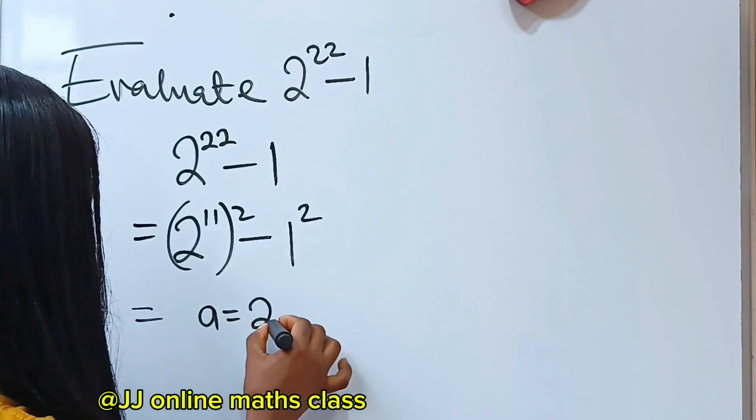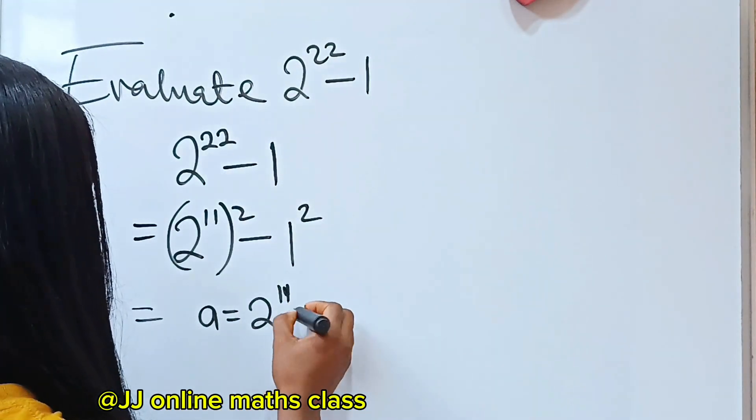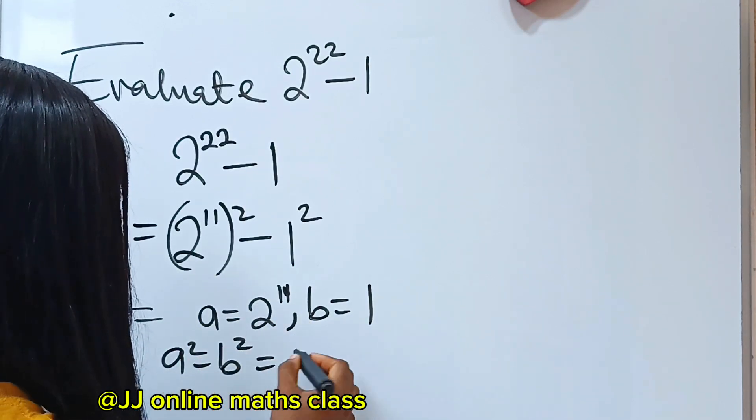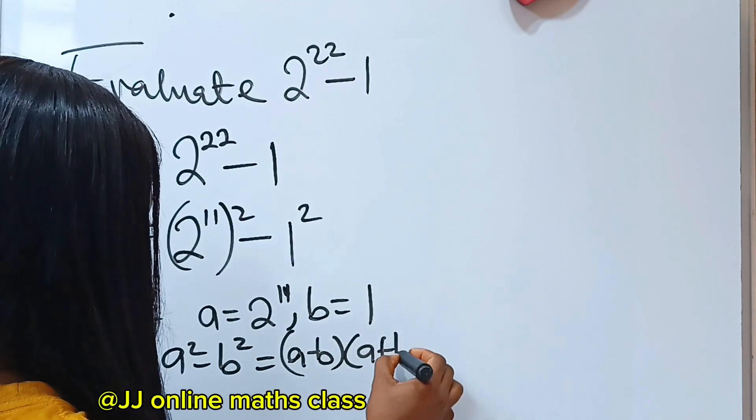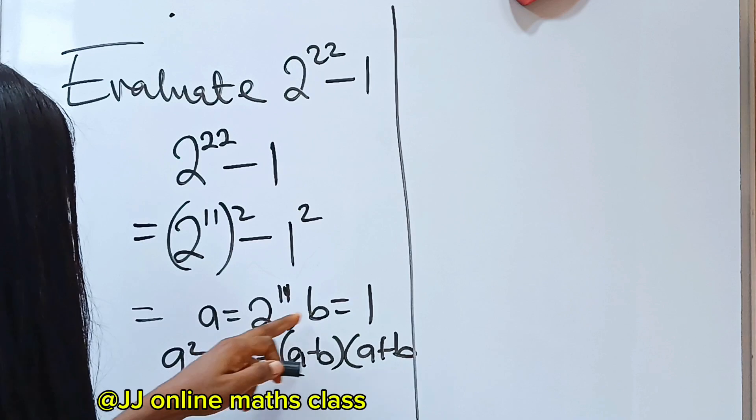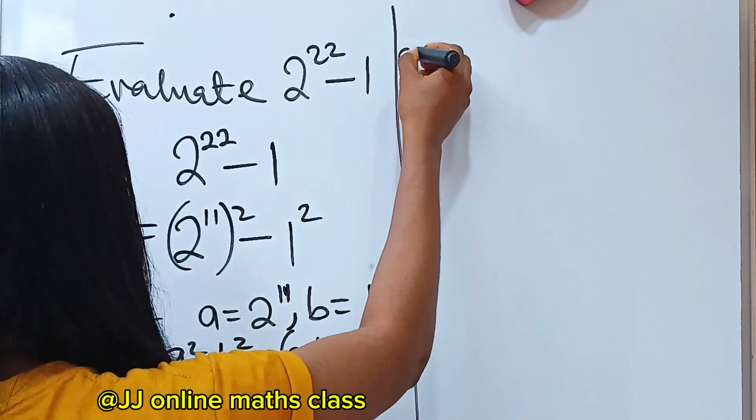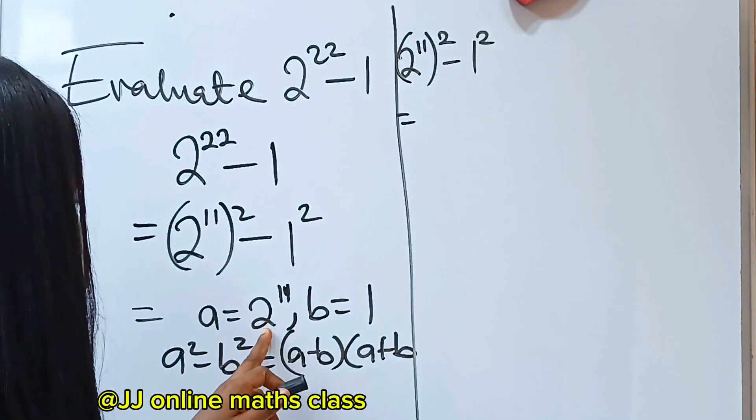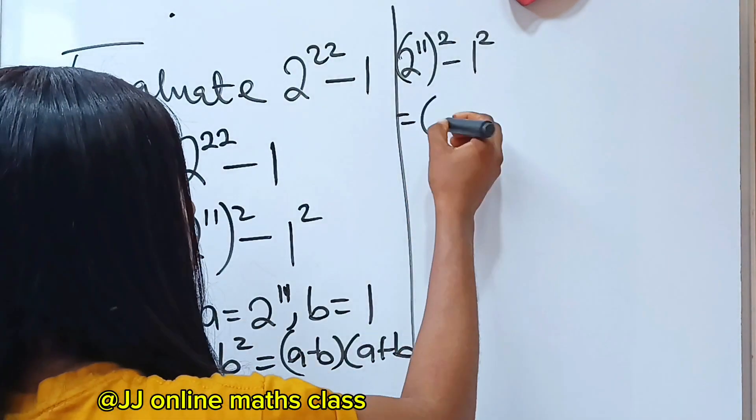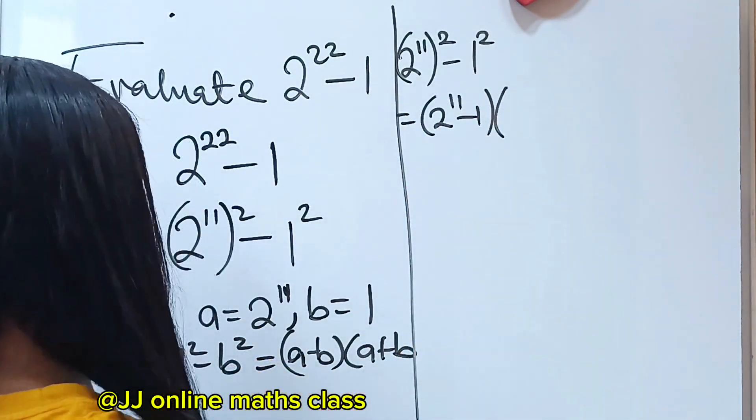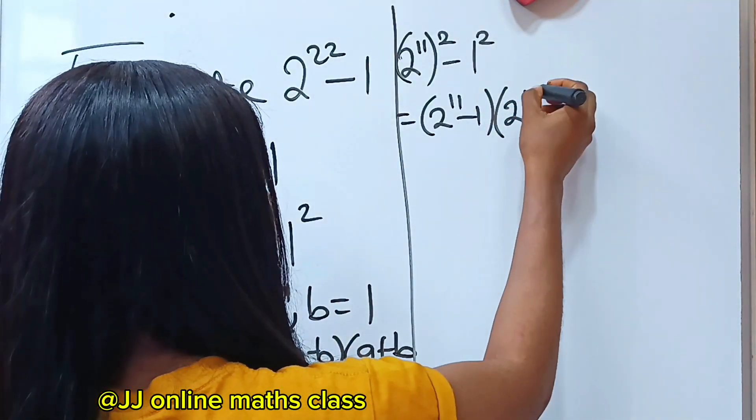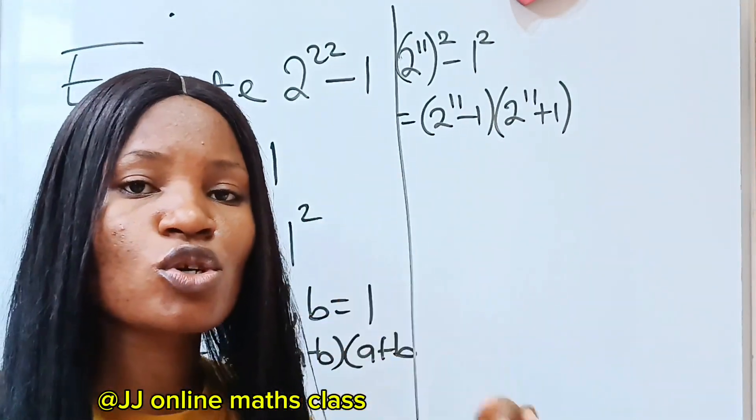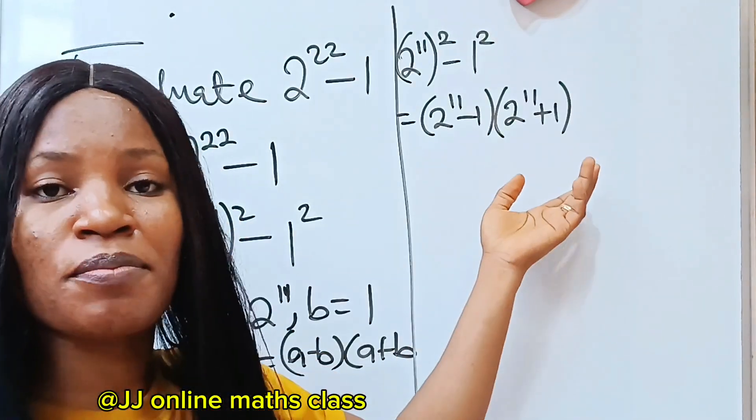Note, our A here is going to be equal to 2 to the power of 11. 2 to the power of 11 minus 1 multiplied by 2 to the power of 11 plus 1. This is where it starts getting tough. Why? Because we are not allowed to use our calculator.